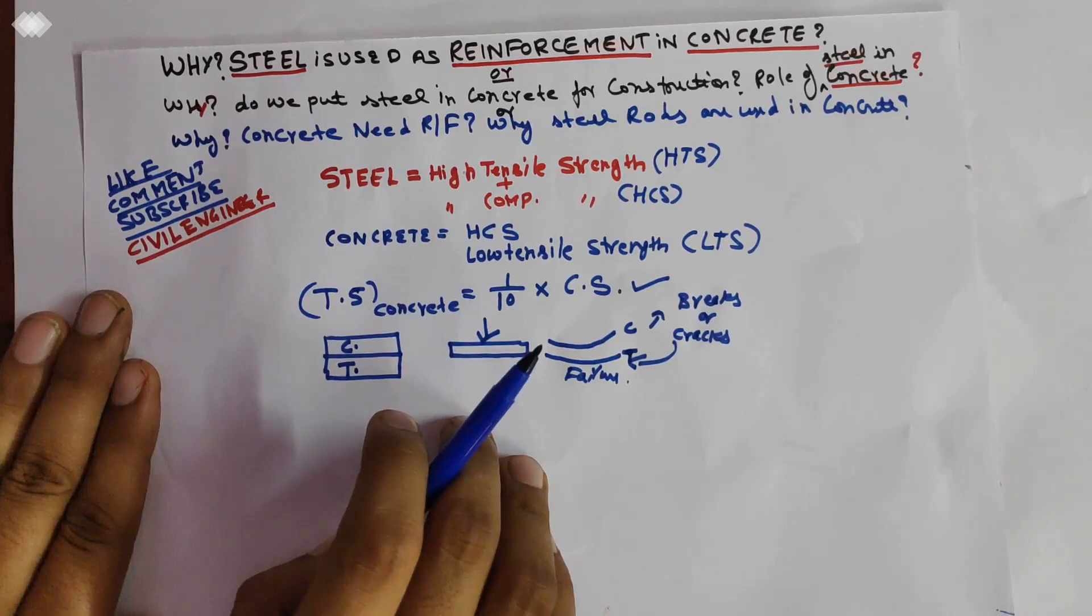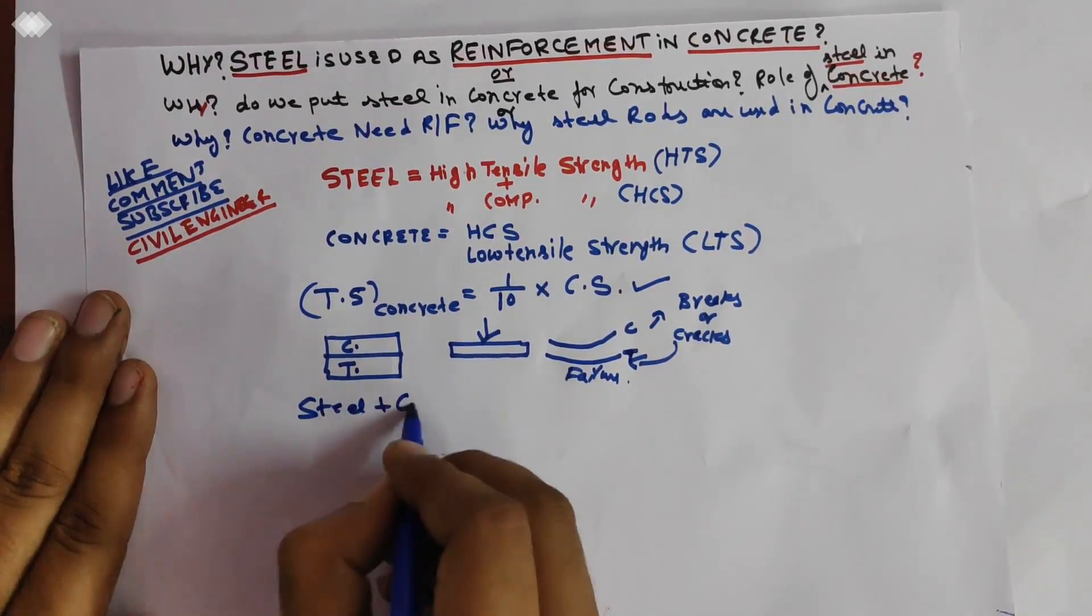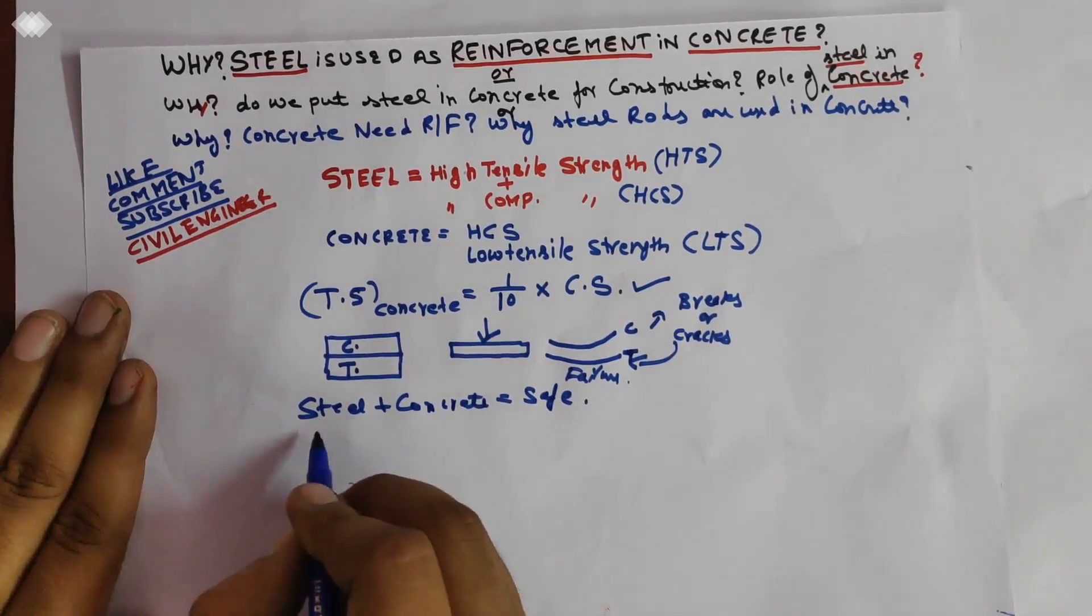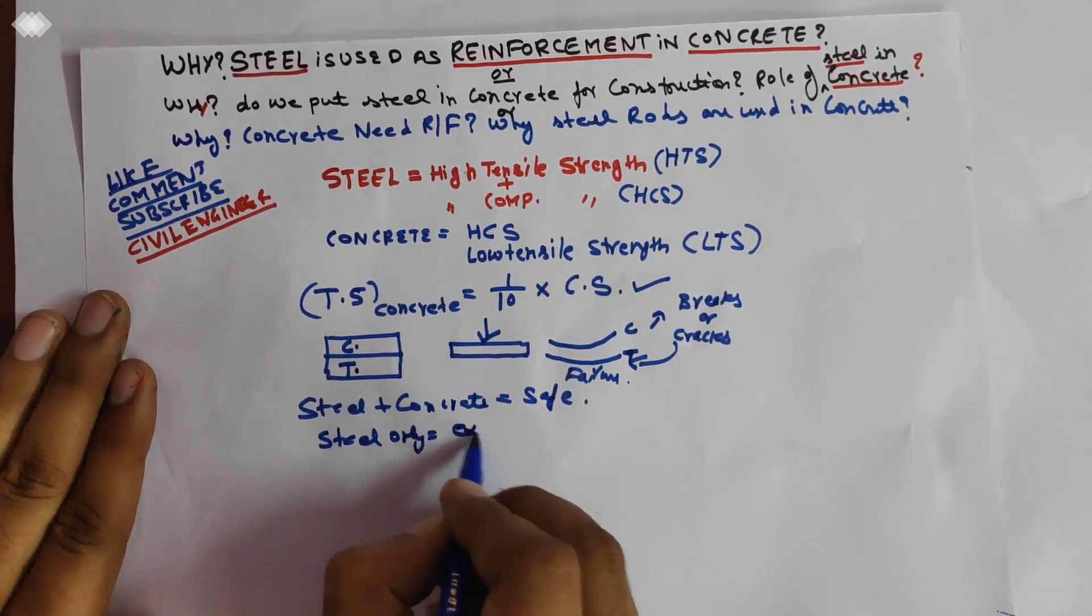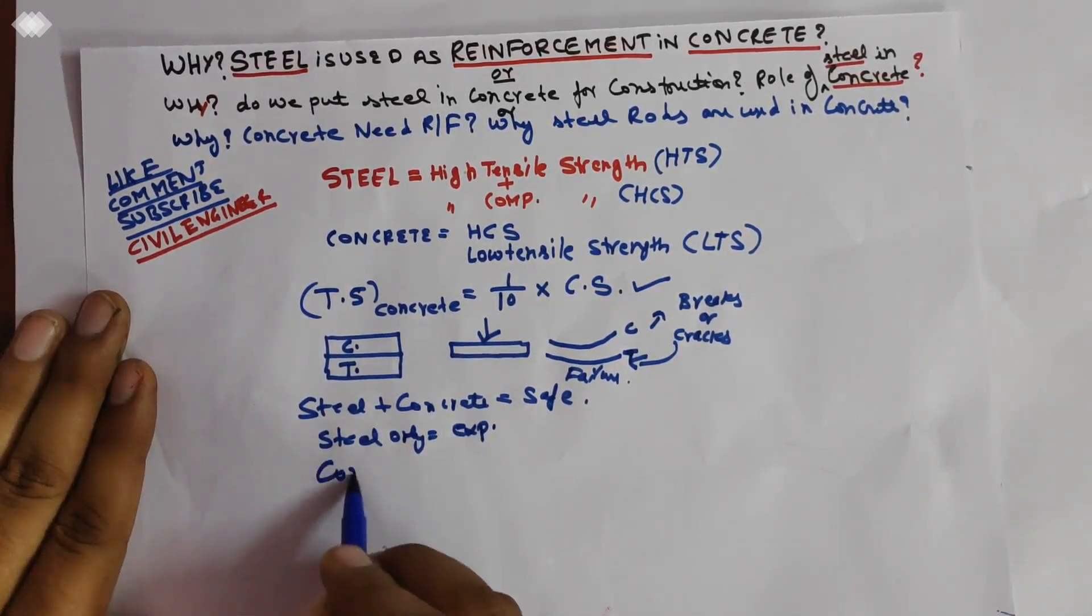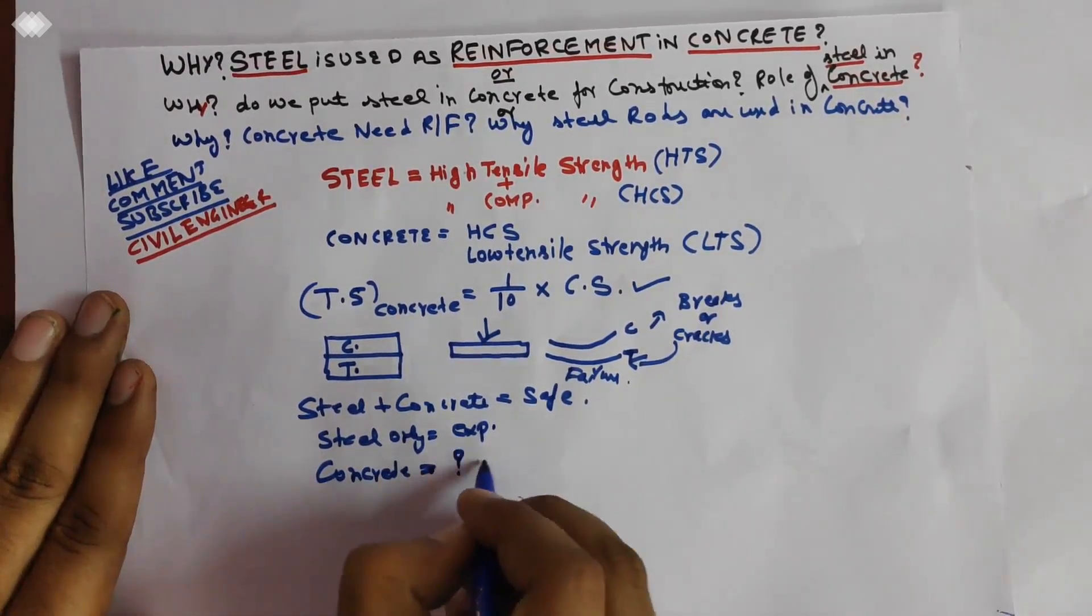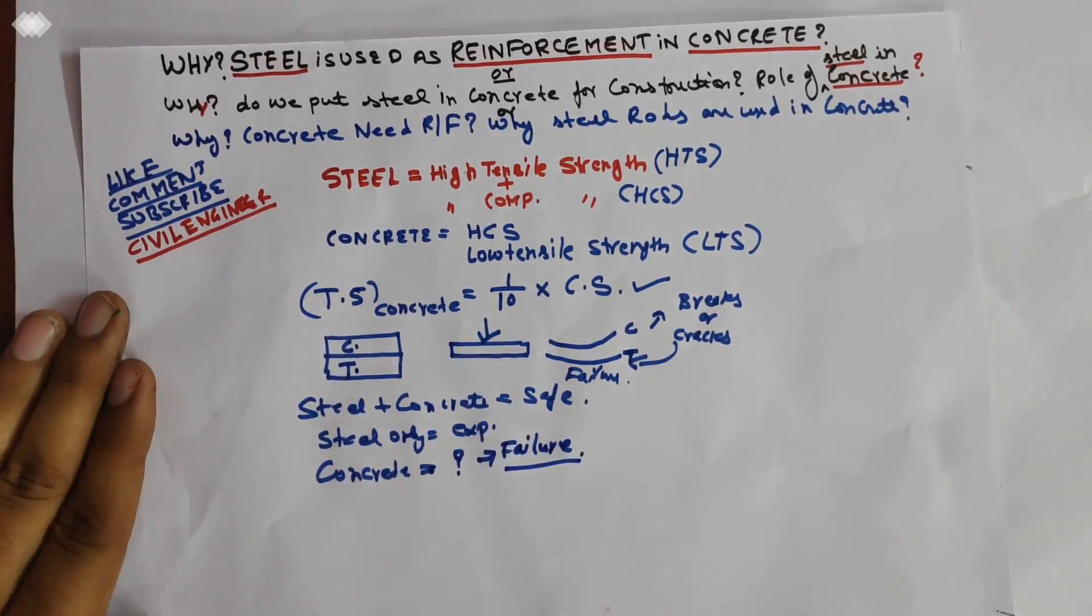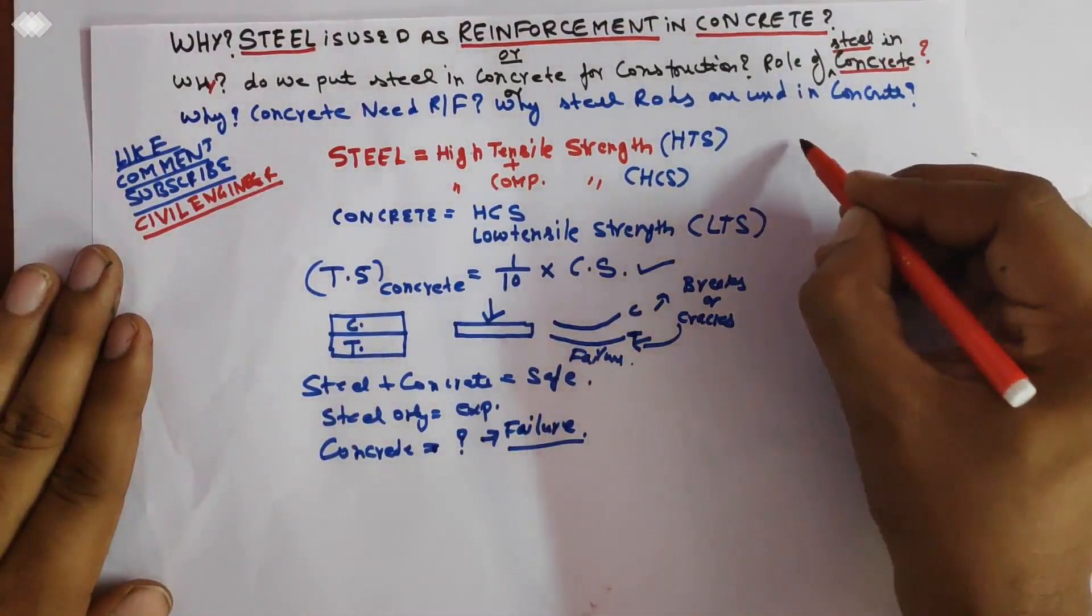Steel, having high tensile strength, is used with concrete in order to counteract the concrete's low tensile strength and durability. So in other words, you can say steel plus concrete gives you a safe design. Steel only is expensive. If you use concrete, then you will achieve failure, especially in earthquake-prone areas.